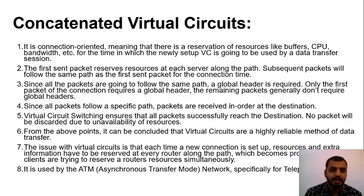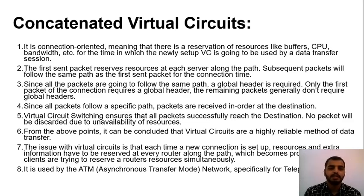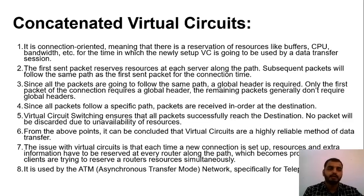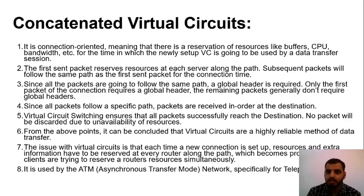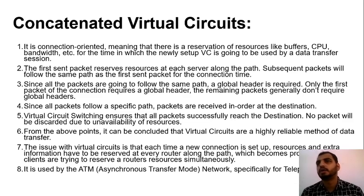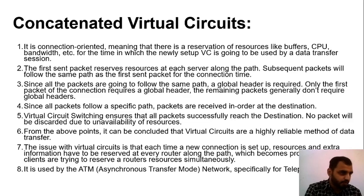Subsequent packets follow the same path as the first sent packet from the time the connection is established. Since all packets follow the same path, a global header is required — but only for the first packet; the remaining packets generally do not require a global header. The global header contains the address that needs to be followed from source to destination.